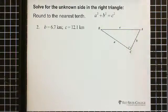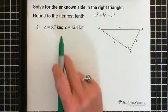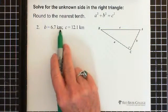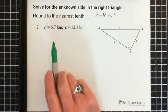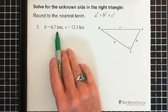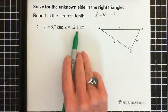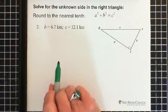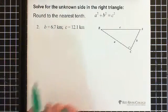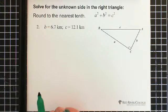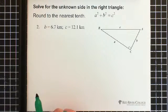Okay, here's the next question. Pause the video. Don't forget your units - we have kilometers. b is 6.7 kilometers, c is 12.1 kilometers, and you're asked to find the unknown side. Pause the video, work on the question, and then restart it for the answer.